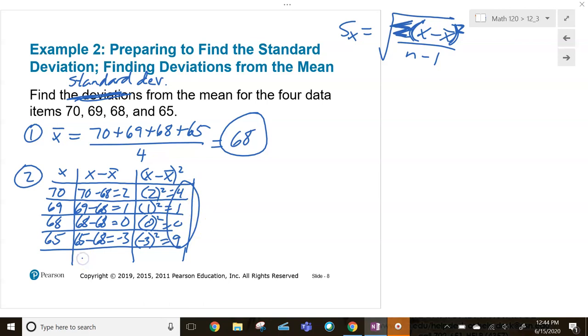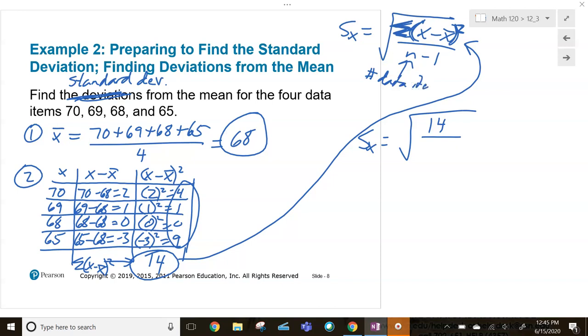So the summation right here, this is the summation of x minus x bar quantity squared. Four plus one is five, five plus zero, five plus nine, we got 14. That's the number that goes right there on top. So our standard deviation is the square root of 14 divided by, now how many numbers do we have? Number of data items? There's four numbers. So four minus one on the bottom. So we've got the square root of 14 thirds.